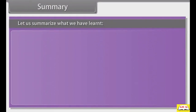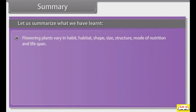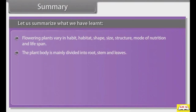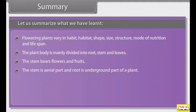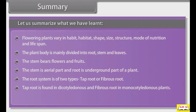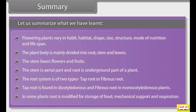Flowering plants vary in habit, habitat, shape, size, structure, mode of nutrition, and life span. The plant body is mainly divided into root, stem, and leaves. The stem bears flowers and fruits. The stem is the aerial part and root is the underground part of a plant. The root system is of two types: taproot or fibrous root. Taproot is found in dicotyledonous plants and fibrous root in monocotyledonous plants. In some plants, roots are modified for storage of food, mechanical support, and respiration.